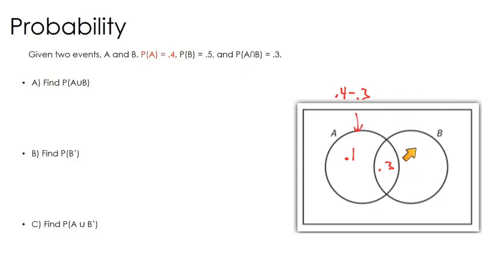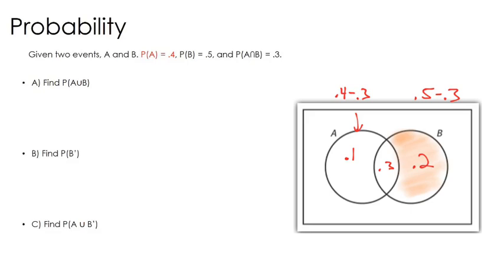We can do the same thing to find this region. We know that the probability of B is 0.5, but 0.3 of those are in the intersection. So if I do 0.5 minus 0.3, we can see there's a 20% chance of B and not A happening. From there, let's go through what we have — the probability of A or B. We could look at this a couple of different ways.